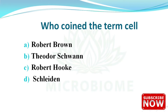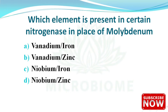Next: who coined the term 'cell'? The options are Robert Brown, Theodore Schwann, Robert Hooke, and Schleiden. The right answer is option C — Robert Hooke. Next: which element is present in certain nitrogenases in place of molybdenum? The options are vanadium ion, vanadium zinc, niobium ion, and niobium zinc. The right answer is option A — vanadium ion.